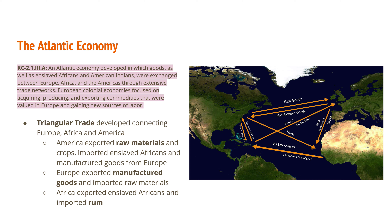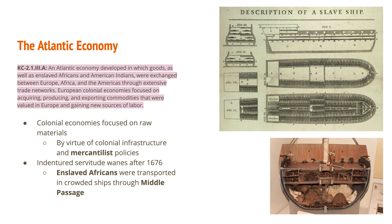This transatlantic trade is sometimes referred to as triangular trade, connecting Europe, Africa, and America — either from the Caribbean or directly to the colonies. America was exporting raw materials and crops, and importing enslaved Africans and manufactured goods from Europe. Those goods sometimes went directly to the colonies, sometimes by way of the Caribbean. Africa exported enslaved Africans and imported rum, while Europe exported manufactured goods and imported raw materials.